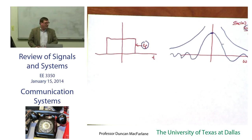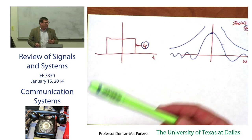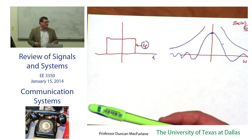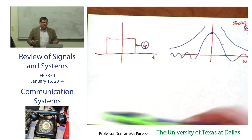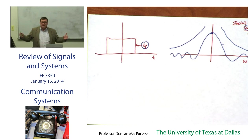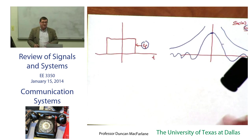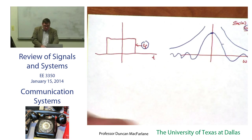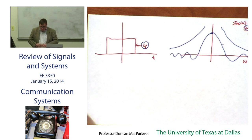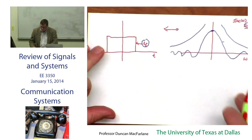That kind of relationship — time is one over frequency, hertz and seconds — that's all it is, just look at the units. A short duration in time is a very long frequency duration. A long duration in time is a short duration in frequency. So these two are Fourier transform pairs.